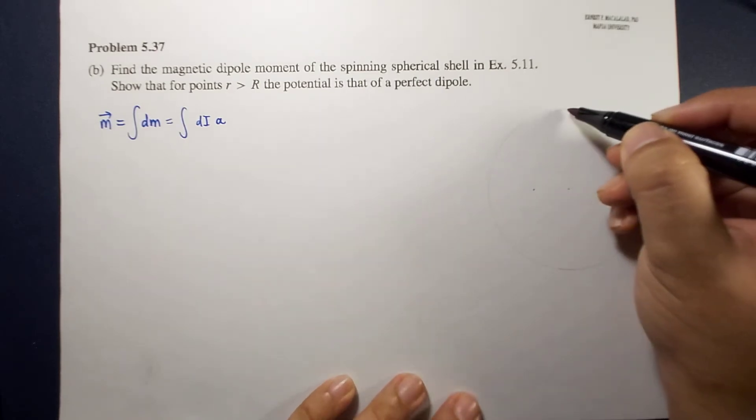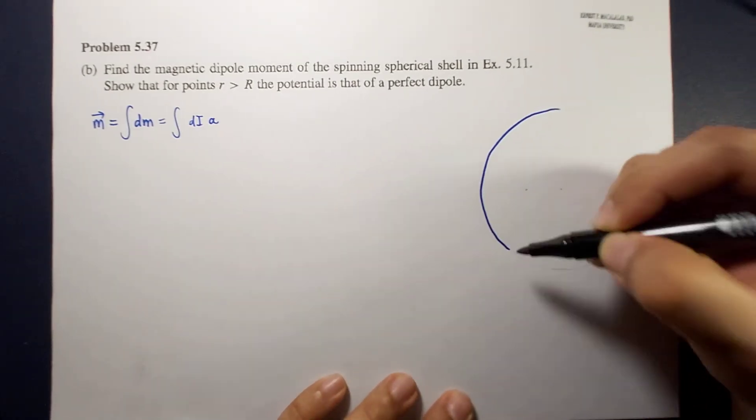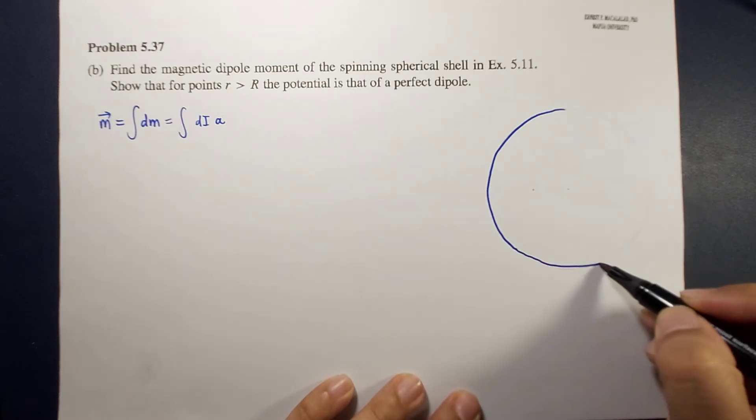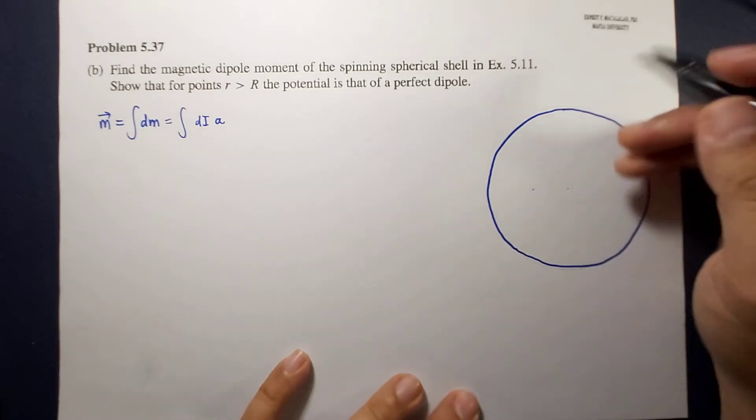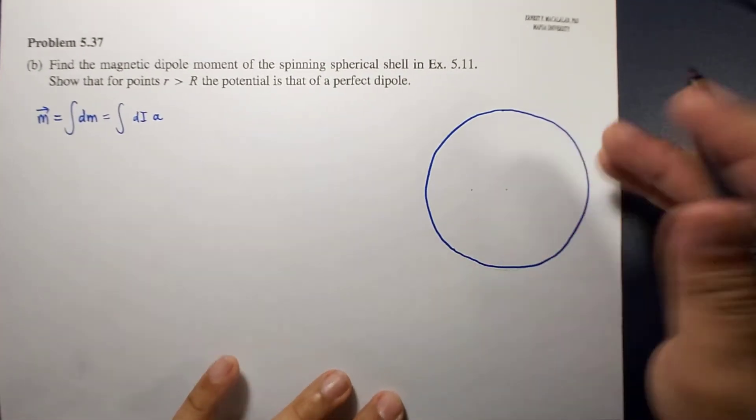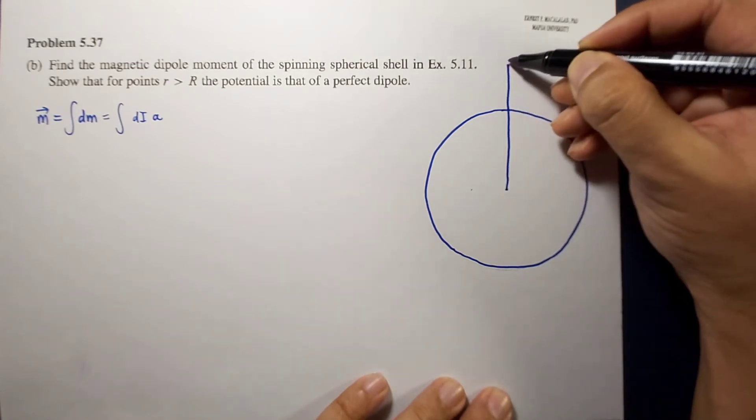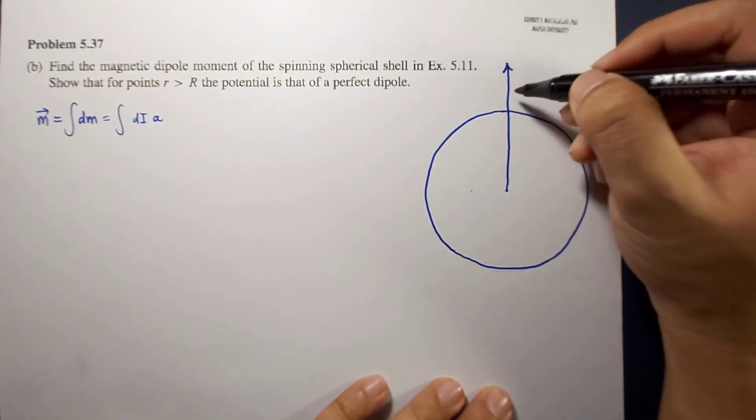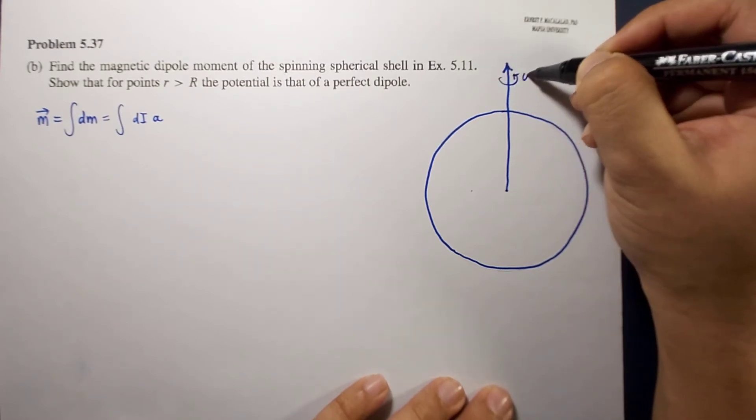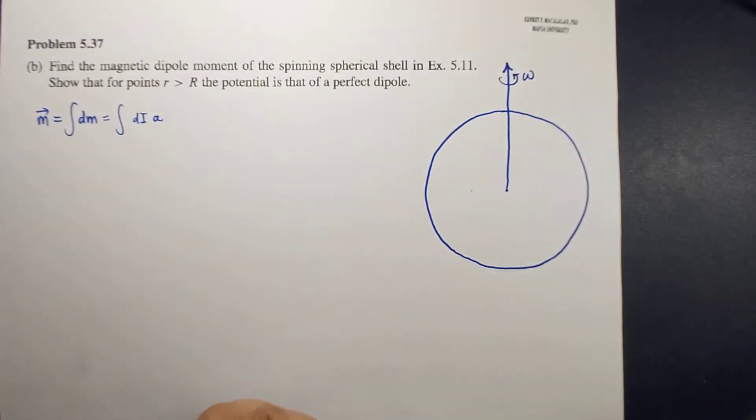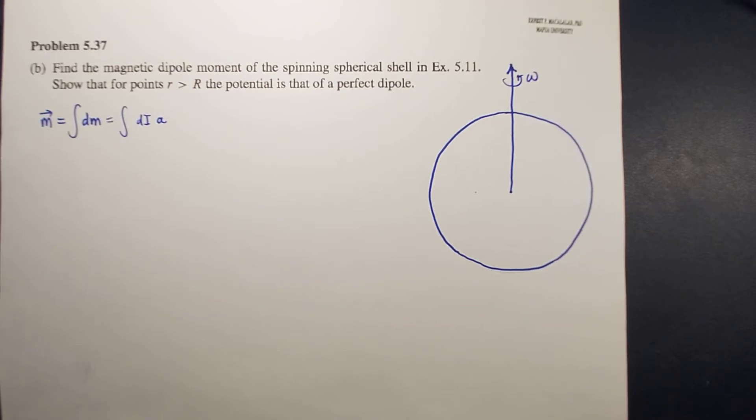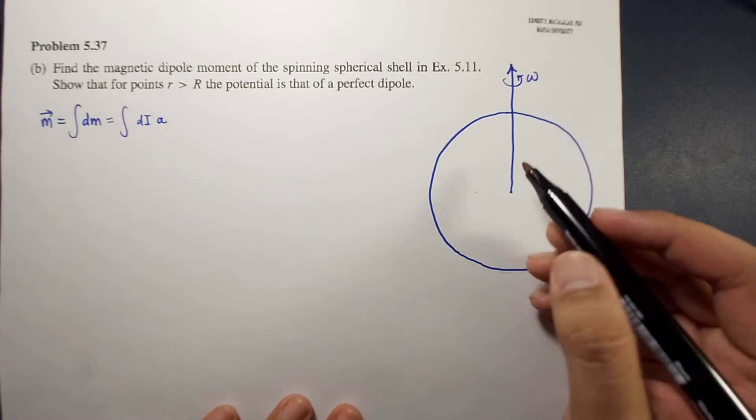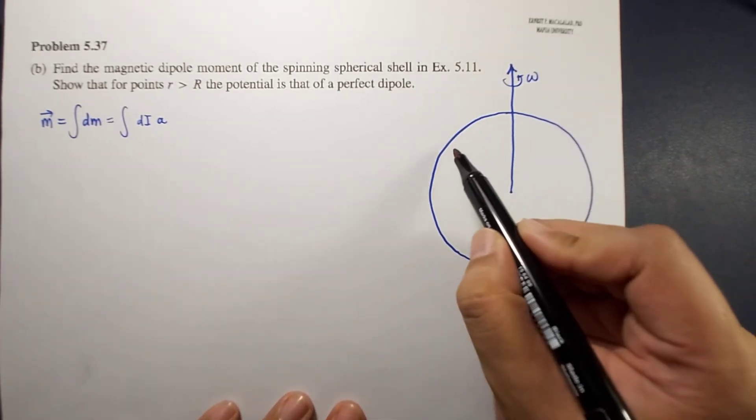Let's say this is your spherical shell, and it's spinning in this direction. This is your omega. Now, if we're going to define a strip, a ring element within the surface, this ring element is very important.